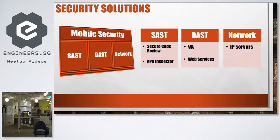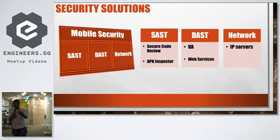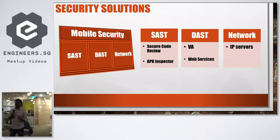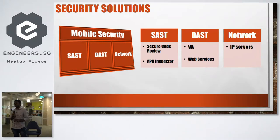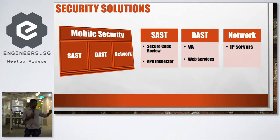Next is DAST — Dynamic Application Security Testing — which deals with your running application: native app, hybrid app, or whatever type. Vulnerability Assessment (VA) is also called pen test or application security test. Here we deal with the application itself — how the application behaves in terms of threats. Mobile also has web services and API security considerations which will be covered in upcoming sessions.